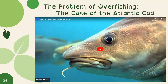We're going to watch a short video about the problem of overfishing — specifically the classic case of the Atlantic cod. This shows why it's important to have sustainable and selective methods, because one of the long-term impacts of unsustainable harvesting is the potential collapse of an animal population or resource.